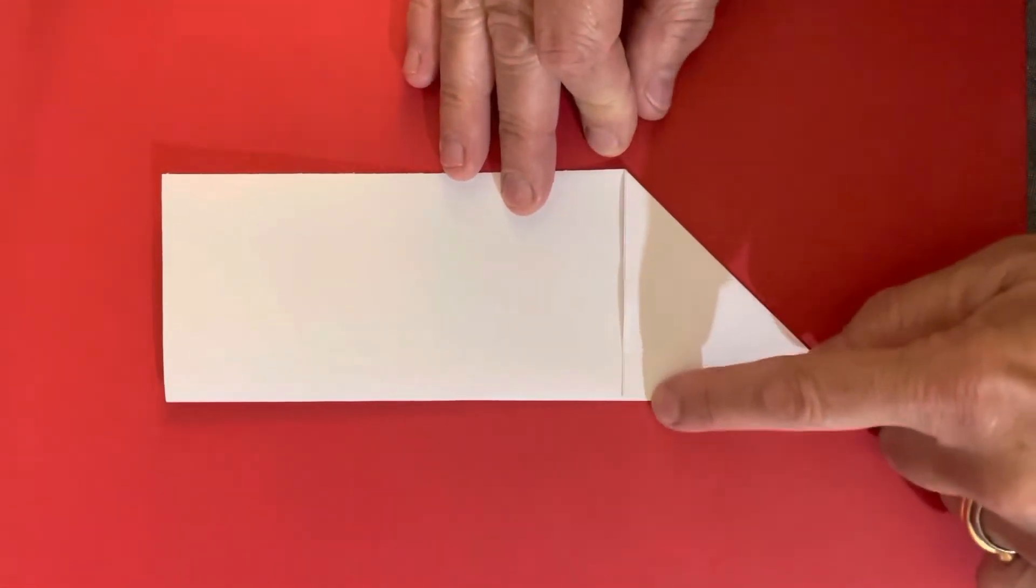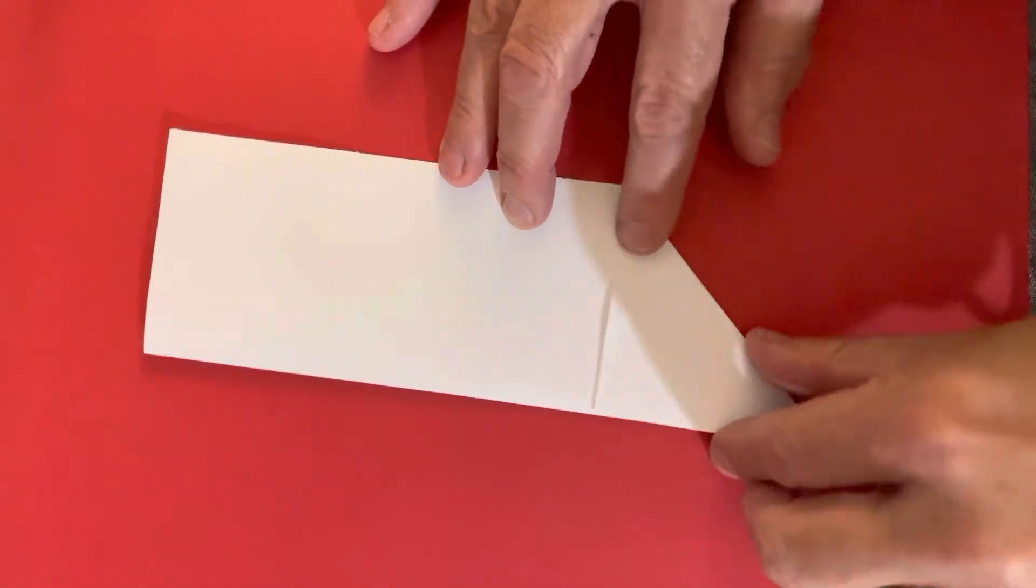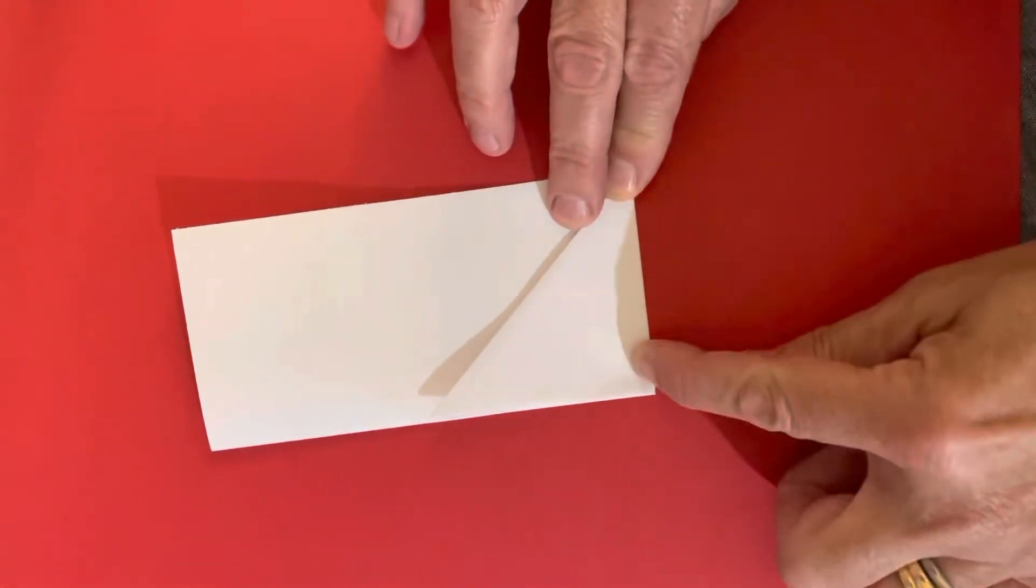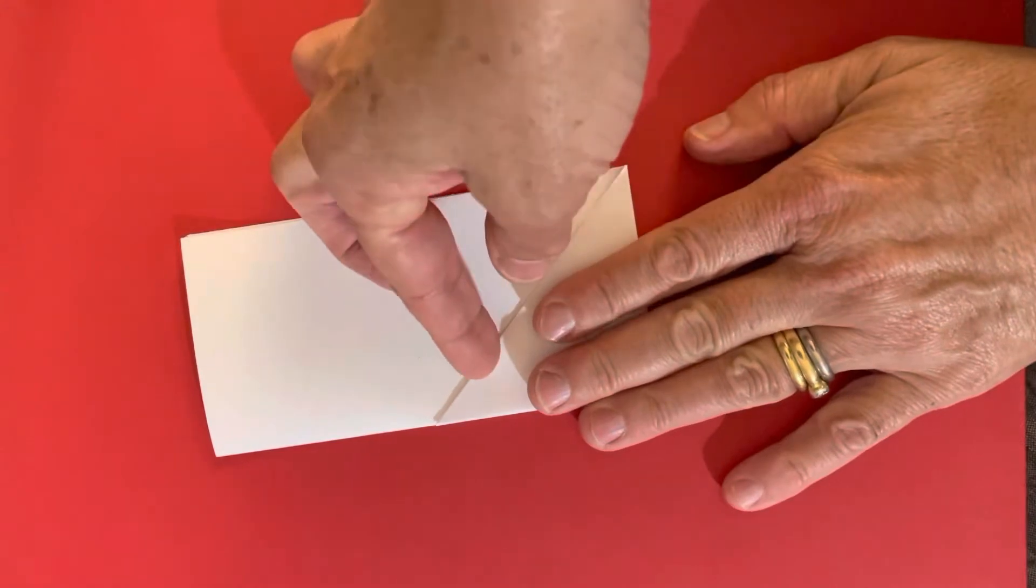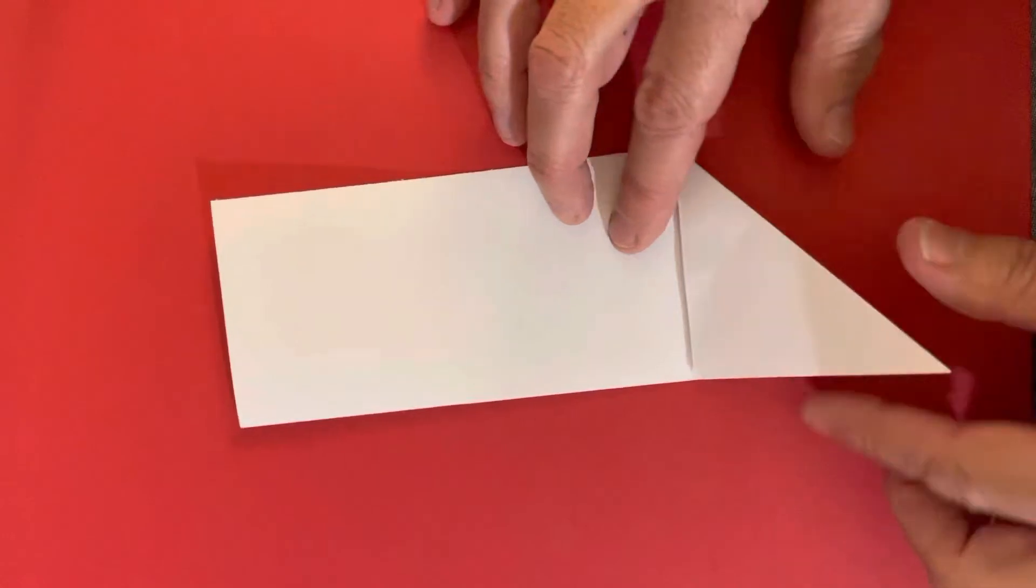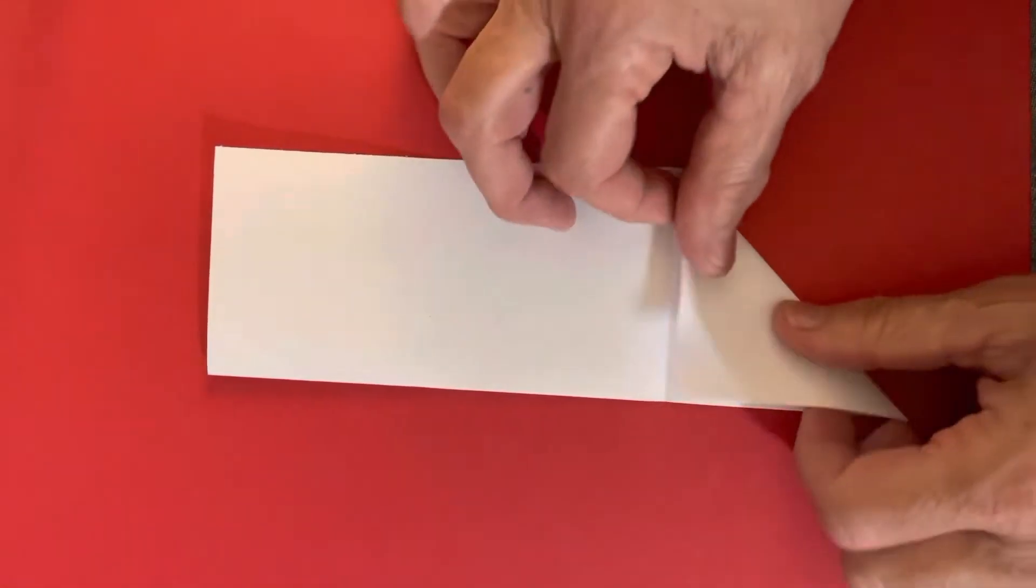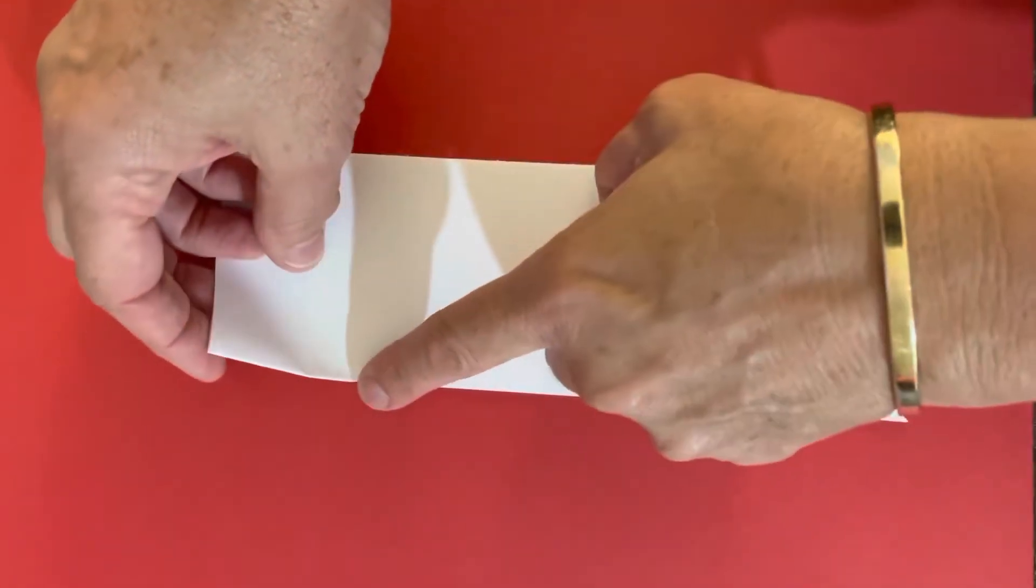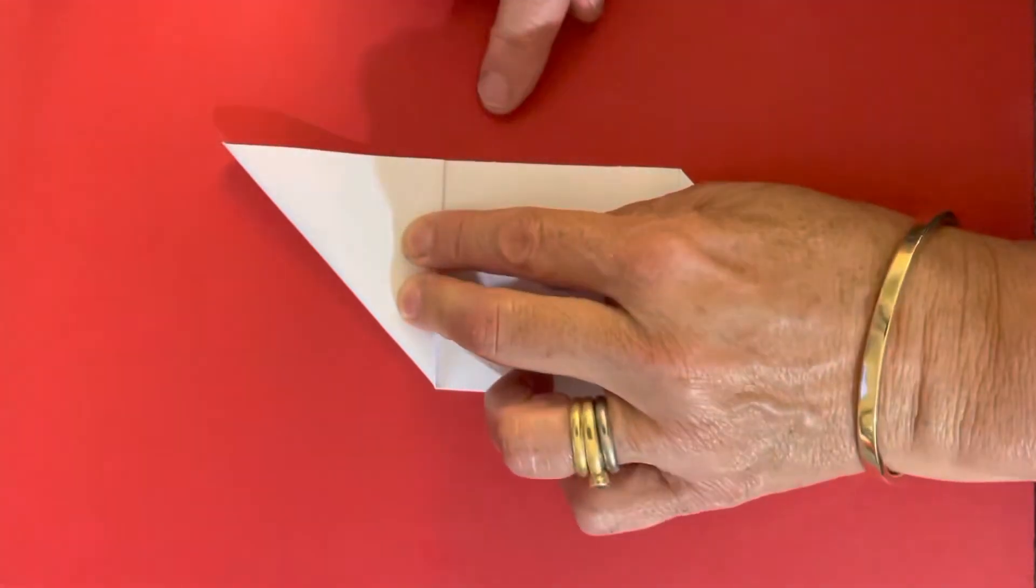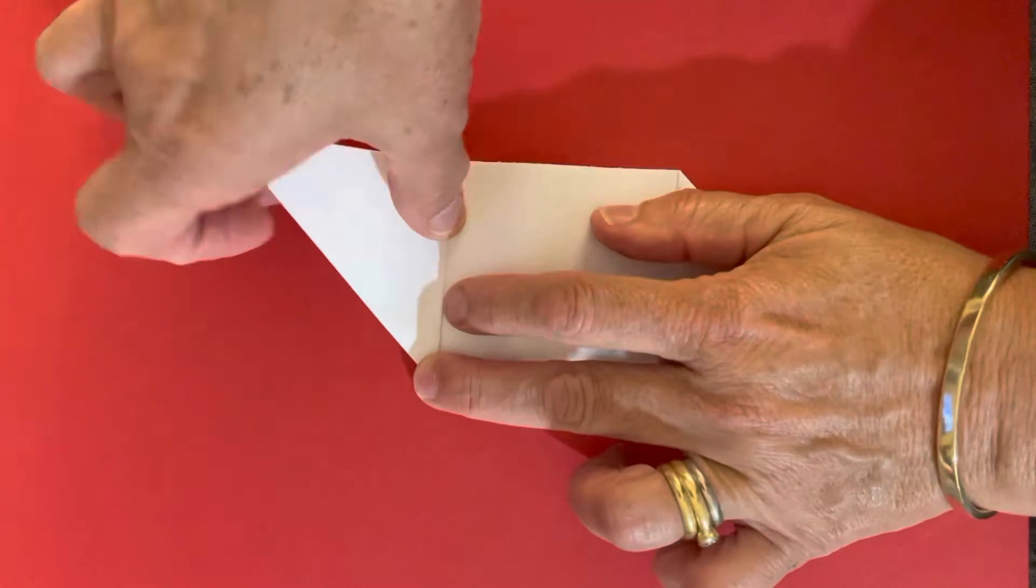Then you can fold this up that way on that line. Open that out. So because I started from this side and fold it over, this time I start from this side and fold it over. Make it match so it comes to a point. And then fold this in.